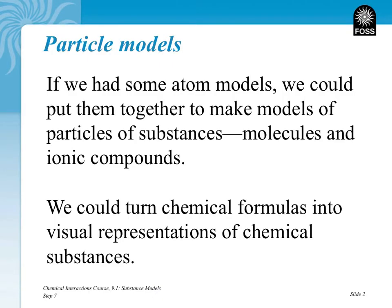If we had some atom models, we could put them together to make models of particles of substances — i.e., molecules and ionic compounds. Simple ones like we saw before, like H2O, or a pair of oxygen atoms, or three oxygen atoms making up ozone. Once you have those chemical formulas and you know how many of each element there are in a substance, you can turn those into visual representations of the chemical substances themselves.